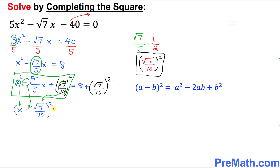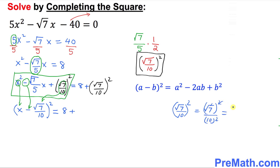On the right-hand side, we have 8 plus (√7/10)². Now, (√7/10)² can be split: the square and square root cancel, leaving 7 divided by 10², which is 100. So that term simplifies to 7/100.